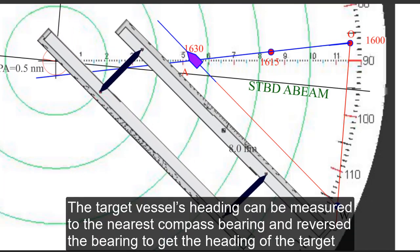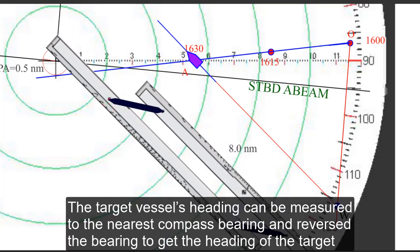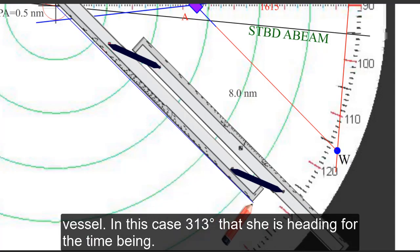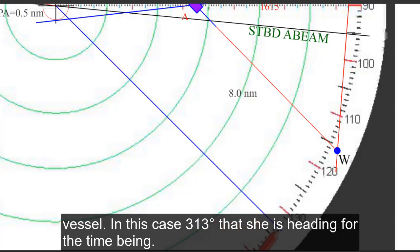In this case 8 nautical miles for 30 minutes and the speed of the target vessel will be 16 knots. The target vessel heading can be measured to the nearest compass bearing and reverse the bearing to get the heading of the target vessel. In this case 313 degrees that she is heading for the time being.